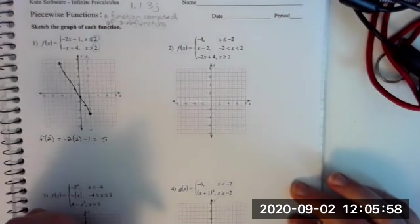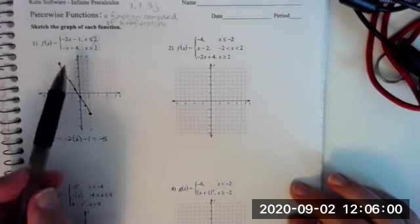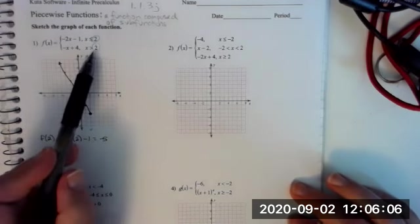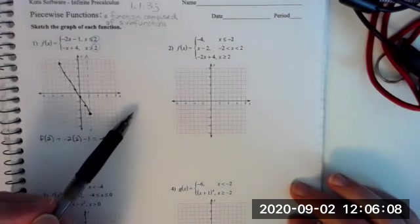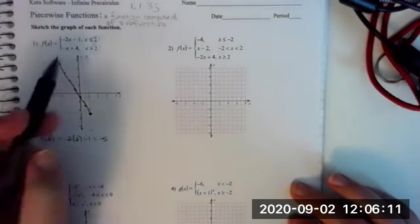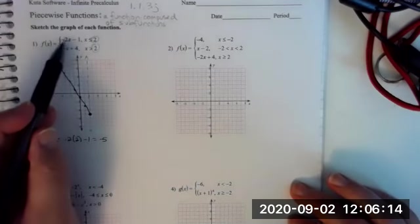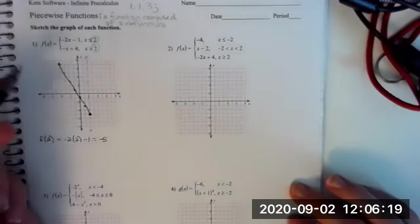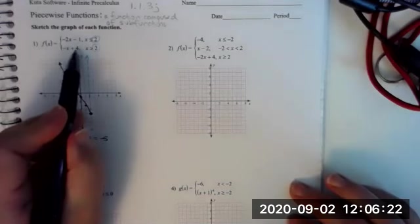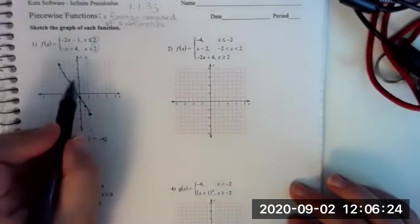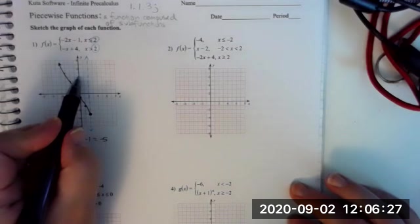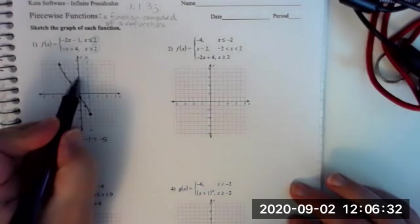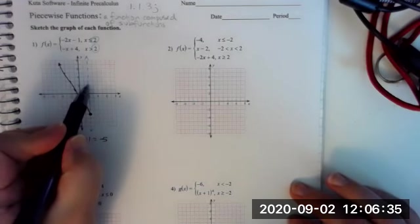The next part of the function is negative x plus 4 when x is greater than 2, so 2 is not actually part of this function. The value at 2 is from the first function, not this one. The x-intercept is positive 4. I'm not going to draw the graph yet because it doesn't start taking place until after the dotted line. Start at 4, down 1 right 1, down 1 right 1.